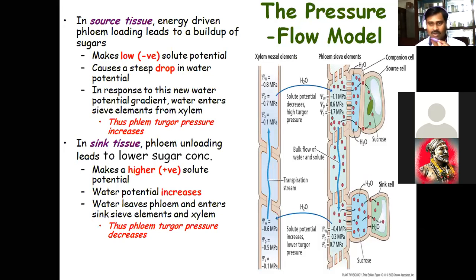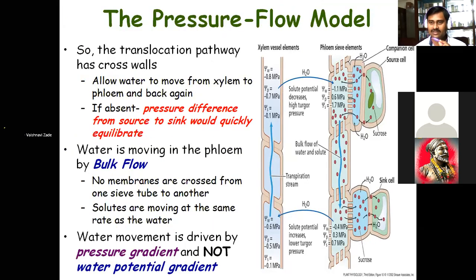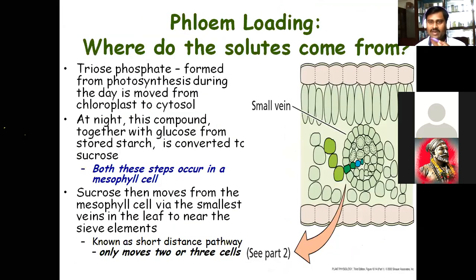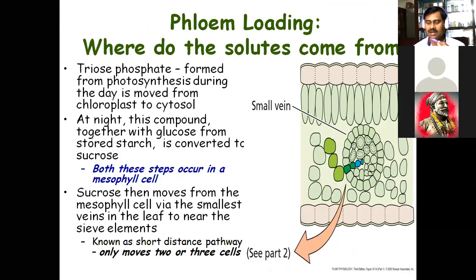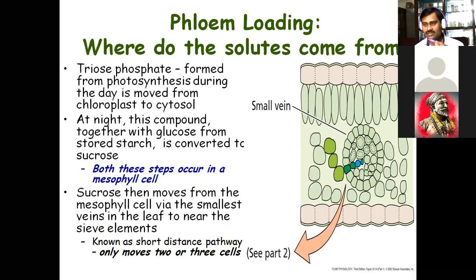Along with sucrose and glucose, amino acids and proteins also move through the phloem. By the activity of photosynthesis, in the daytime food is synthesized in the mesophyll tissue; it moves from chloroplast to cytosol, and at night this compound together with glucose from stored starch is converted into sucrose. Starch is not moving — it is sucrose and glucose that move, mostly sucrose.